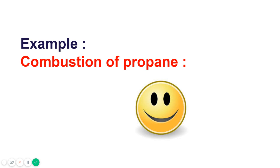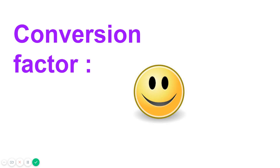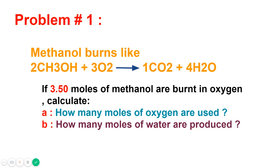For example, consider the combustion of propane. In the chemical equation, one mole of propane reacts with five moles of oxygen, producing three moles of carbon dioxide and four moles of water. A conversion factor is a ratio of coefficients found in a balanced chemical equation which can be used to interconvert the amount of any two participants, whether reactants or products, and it is used in all stoichiometric calculations.